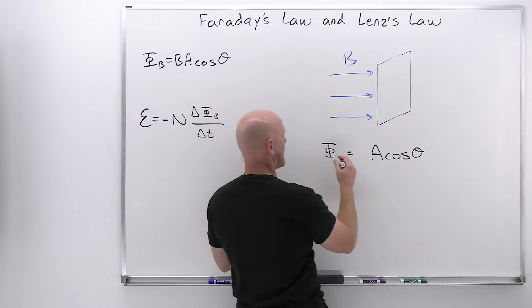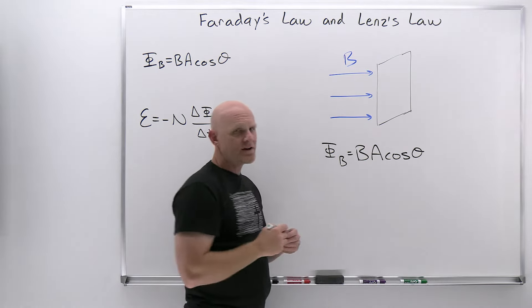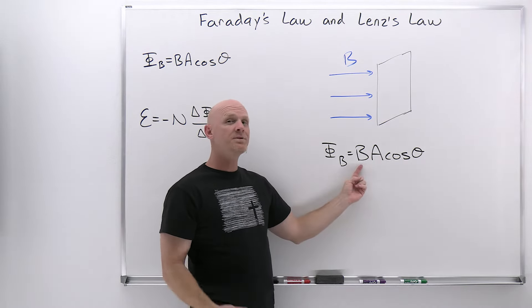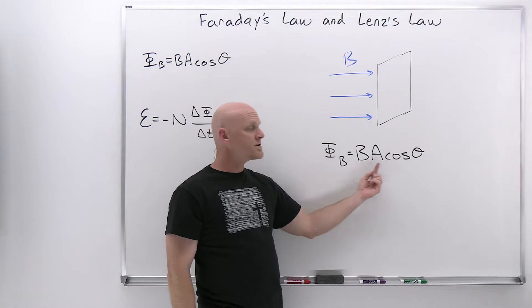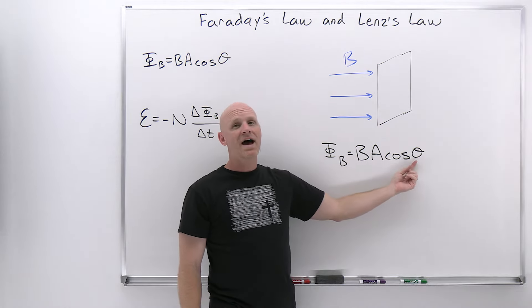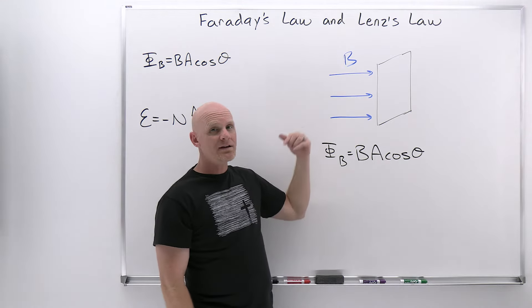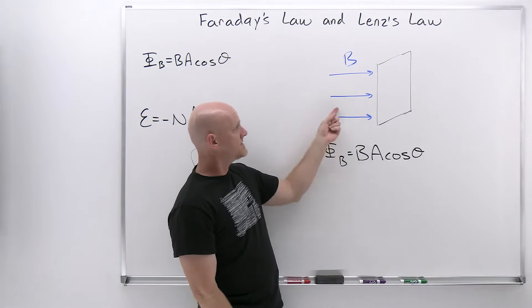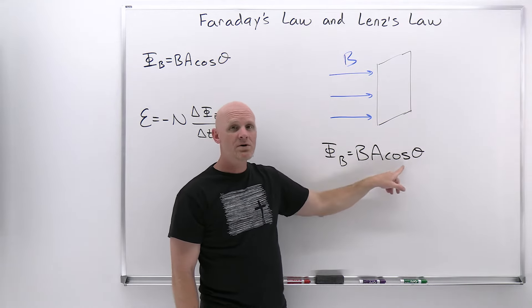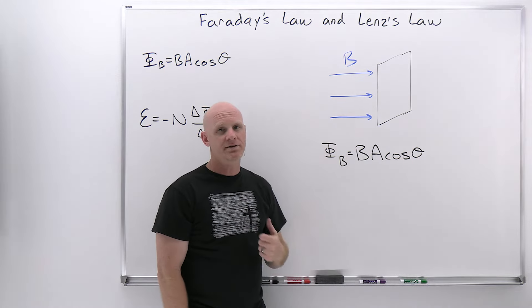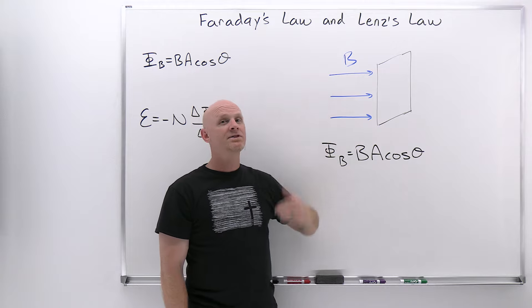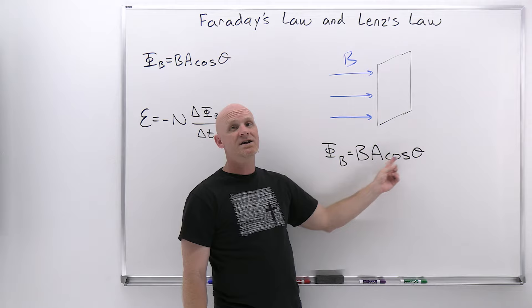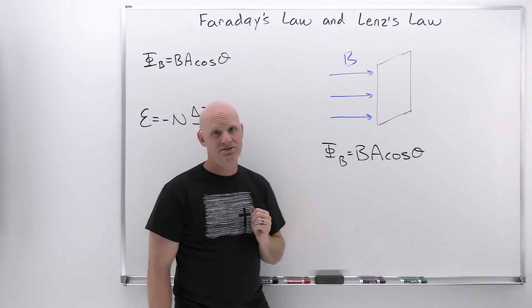Now we'll be calculating the magnetic flux — it's still related to the number of magnetic field lines passing through the surface. That relies on the strength of the magnetic field, the area of the surface, and theta is defined in exactly the same way. If your surface and the magnetic field are in the same plane, then no field lines pass through it: theta would be 90 degrees, cosine of 90 is zero, and the magnetic flux is zero.